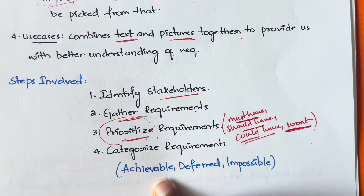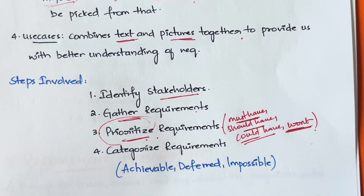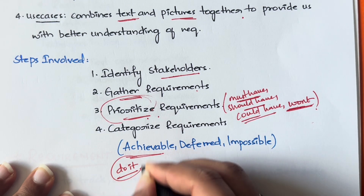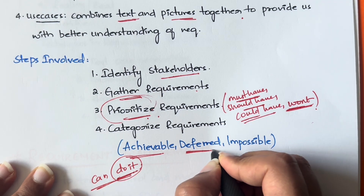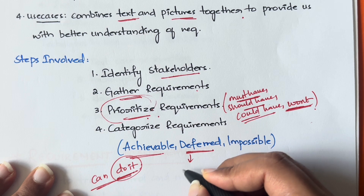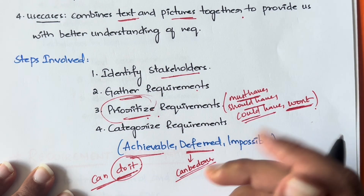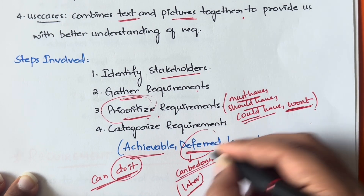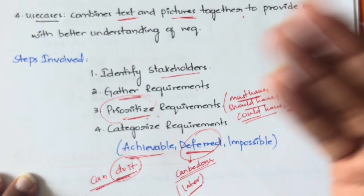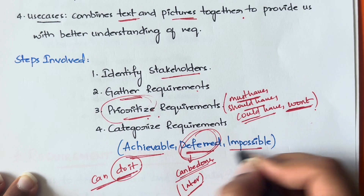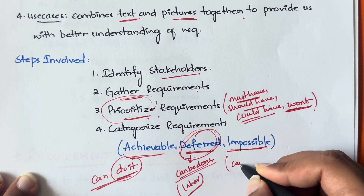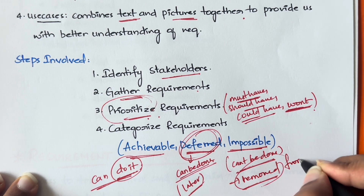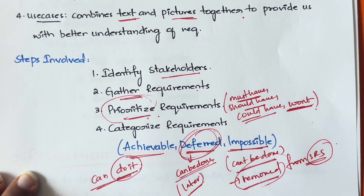Then you categorize the requirements into three groups: achievable, deferred, or impossible. Achievable means you can implement it - you can do it. Deferred means the implementation can be done but not right now; it's not really needed at this moment and can be implemented at a later point in time - you postpone it. Impossible means it cannot be done. These impossible requirements should be removed from the requirements list and from the SRS, since they cannot be implemented.